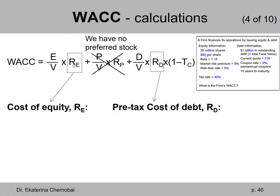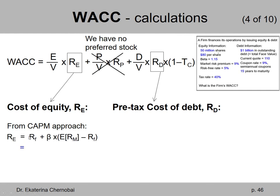Let's start by calculating RE and RD — RE being the cost of equity. Remember from earlier in this chapter, we looked at two different formulas for the cost of equity and you use the right one based on what you're given. Because we have the beta, the market risk premium, and the risk-free rate, we use the CAPM approach — the capital asset pricing model.